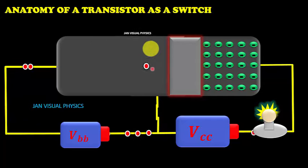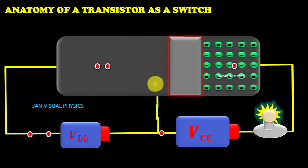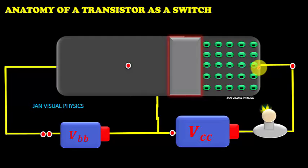This is due to the fact that base region of the transistor is very thin. This is very lightly doped and this region is less positive compared to collector terminal of the transistor.